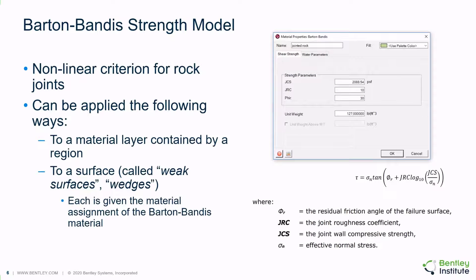The Barton-Bandis shear strength model provides a nonlinear criterion for rock joint strength. The strength model can be applied to a particular material layer as defined by a region or to a weak surface. The material model is defined by the joint wall compressive strength, the joint roughness coefficient, and the residual friction angle of the failure surface.